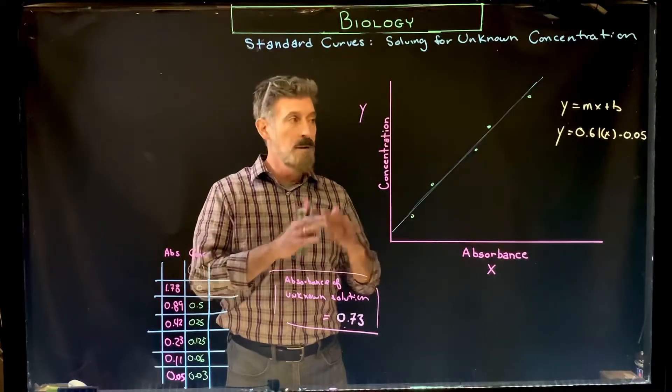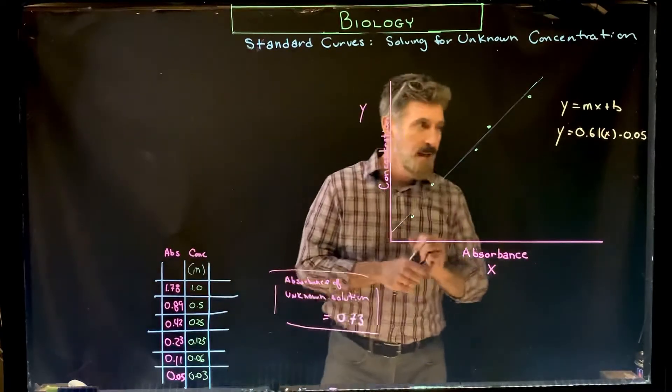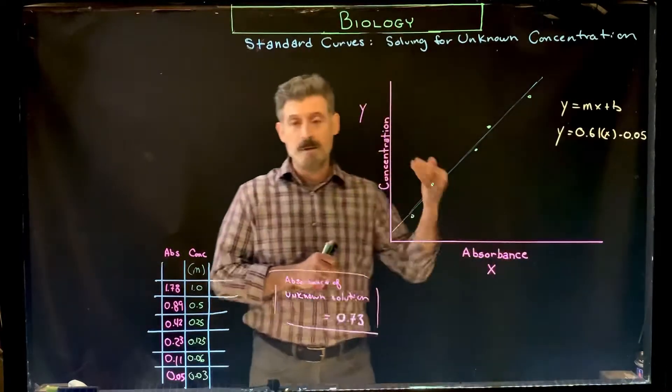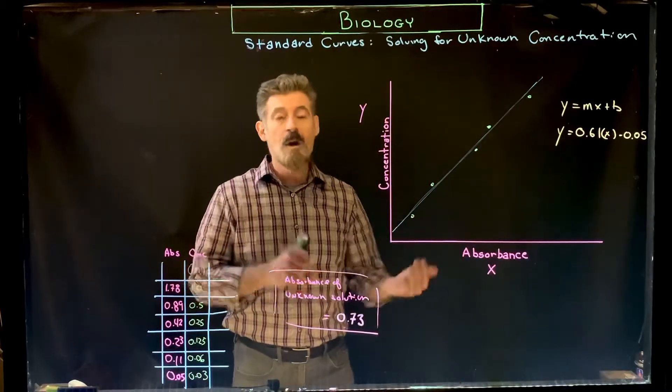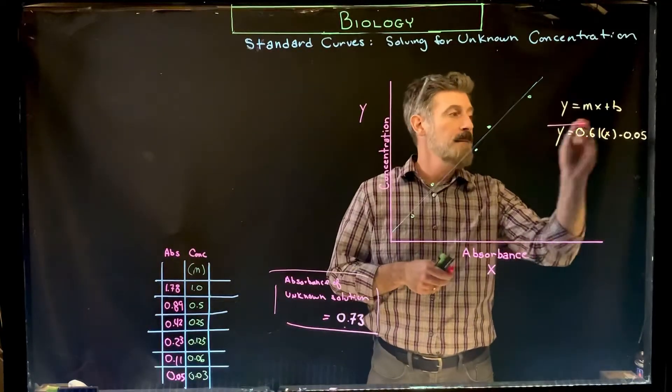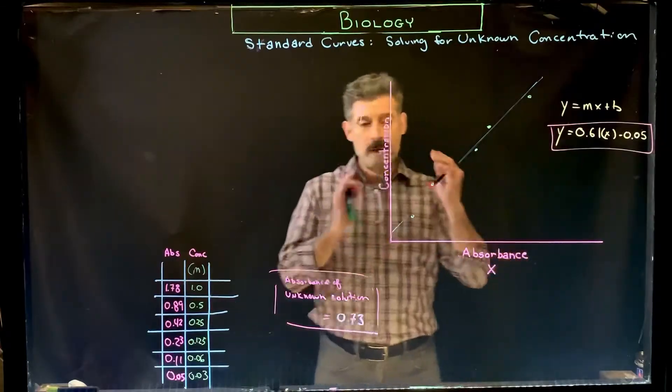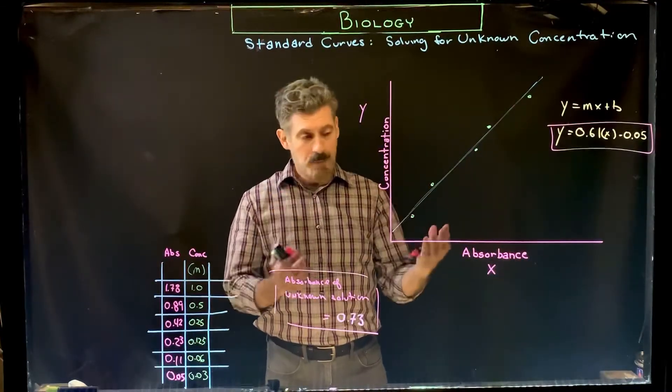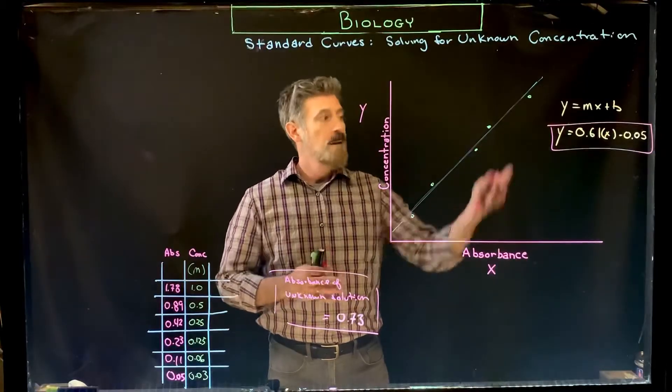We know this. We're not necessarily testing it as part of our objective. What we're trying to do is use the standard curve to solve for the concentrations of unknowns. The way we do that is we get the equation for the line. You would have to input this data into a graphing program, set it up properly, you get the graph.